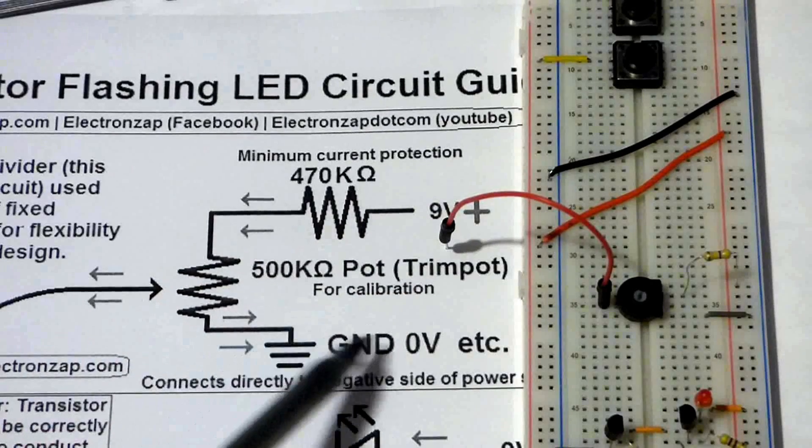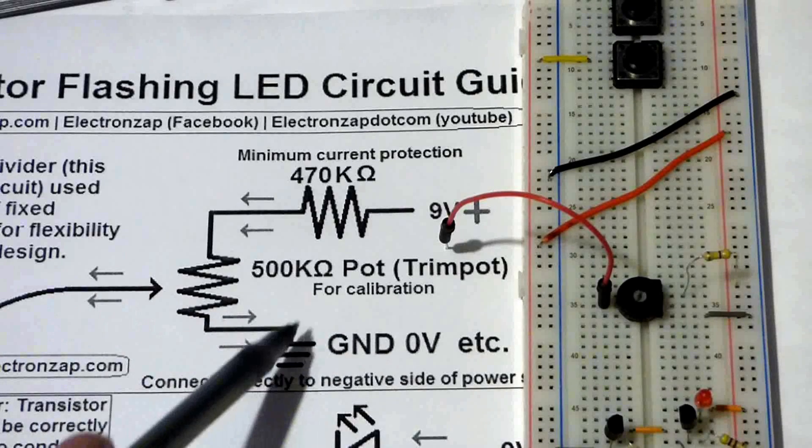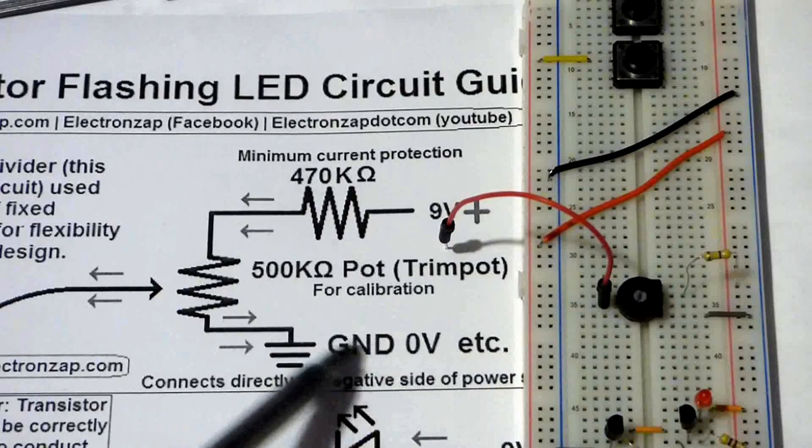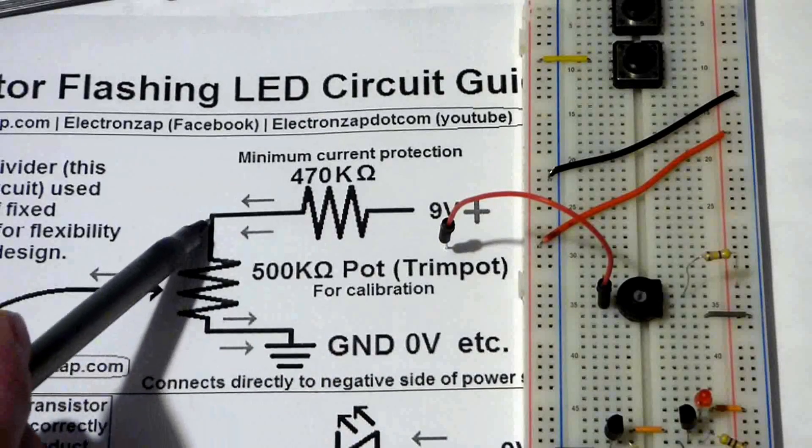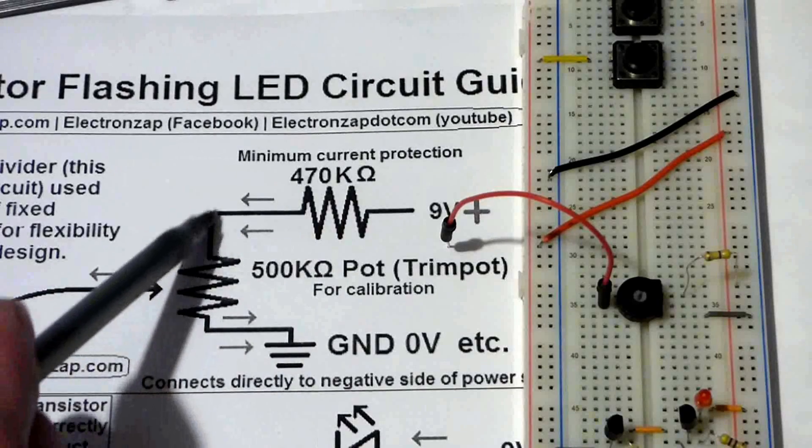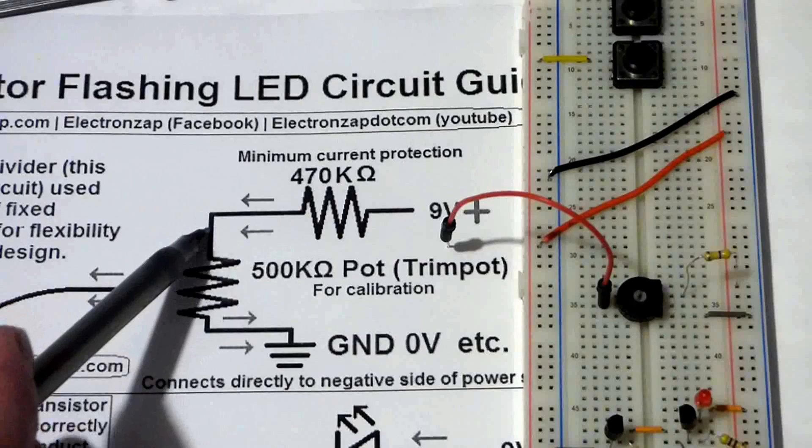And this is a 500 kilohm potentiometer. So if we put it all the way this way, that will bring it down to zero volts. Everything ends up going to zero volts, so there will be no activity in the circuit if we do that. But the closer we get this way, the higher the voltage will go up, but it will never get higher than 5 volts. And this will also limit the current.